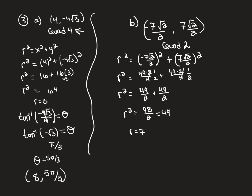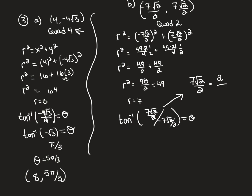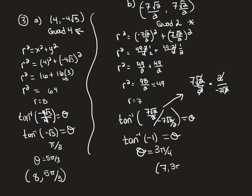For theta, compute arctan(y/x). Taking 7√2/2 divided by −7√2/2 using keep-change-flip: the √2s and 2s cancel, and 7 divided by −7 gives −1. So arctan(−1) = theta. Tangent equals 1 at all the 45-degree angles, but we're in quadrant 2, so the angle is 3π/4. The answer is (7, 3π/4).